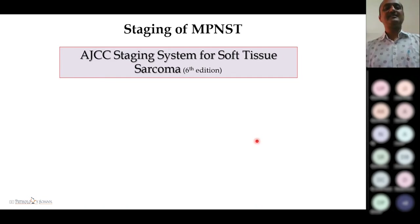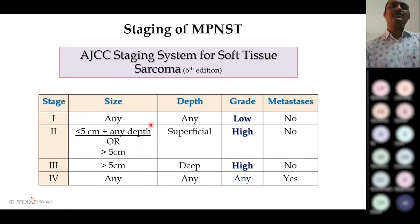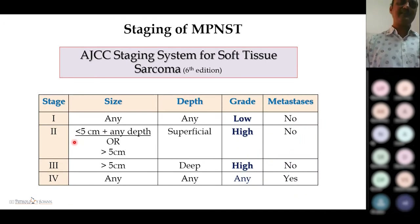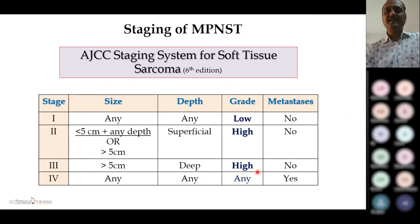For staging, AJCC criteria for soft tissue sarcoma are used for MPNST, based on size, depth, grade, and metastasis. Stage 1: any size/depth, low grade, no metastasis. Stage 2: less than 5 cm, any depth, superficial, high grade, no metastasis; or more than 5 cm, superficial, high grade. Stage 3: more than 5 cm, deep, high grade, no metastasis. Stage 4: any criteria with metastasis.